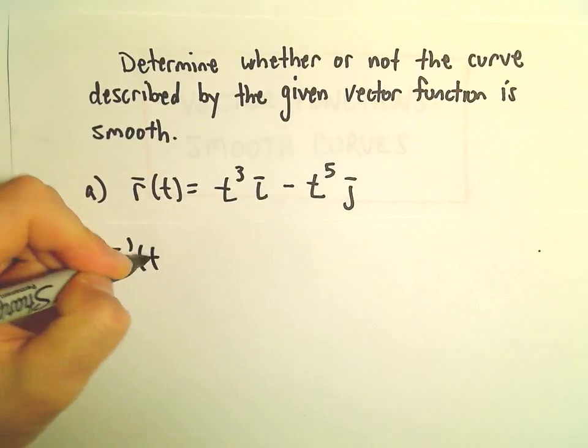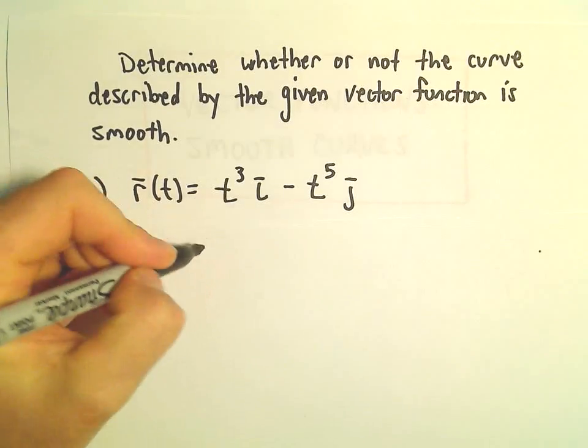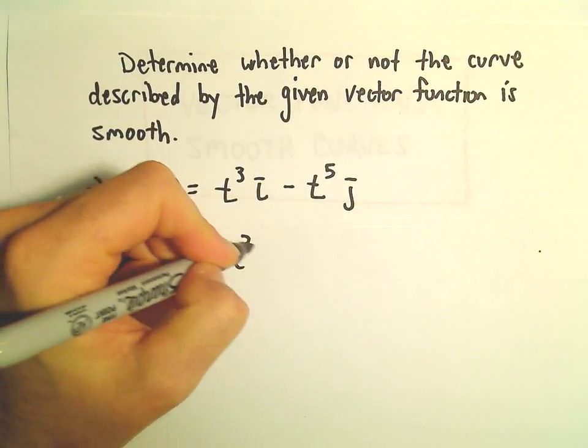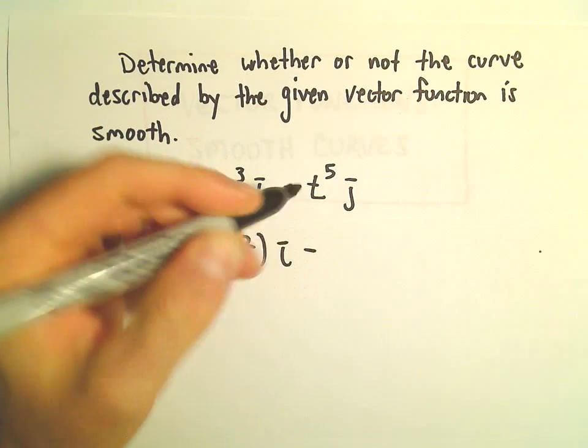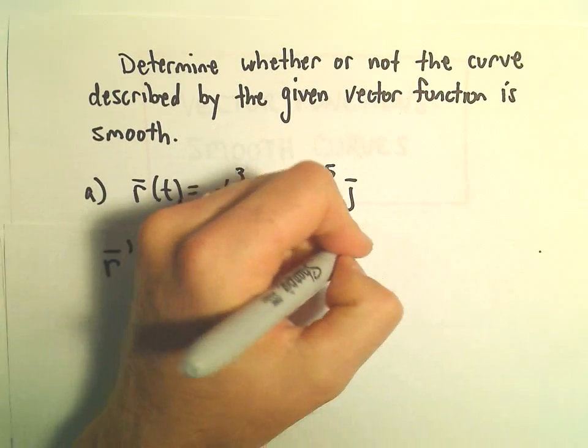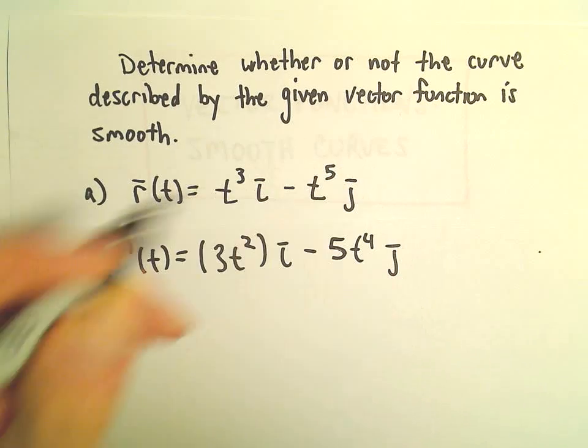So r prime of t will give us the derivative of t cubed is 3t squared times i. The derivative of t to the fifth will be 5t to the fourth times j.